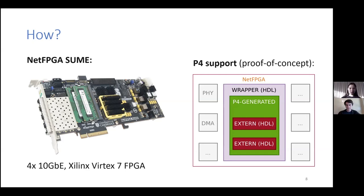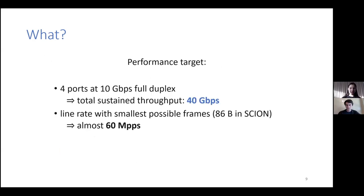And thanks to Steven's team, among others, there is a P4 compiler, which allows us to write P4 code and then compile it into an FPGA design that runs on the NetFPGA. So now that we know what hardware we are running on, we can define our performance target. Since we have four ports at 10 gigabits, and we want to run at line rate, because why not, what we are trying to achieve is the total sustained throughput of 40 gigabits per second. And we want to be able to do this also with the smallest possible frames, so that means processing about 60 million packets per second.